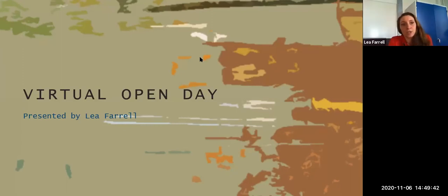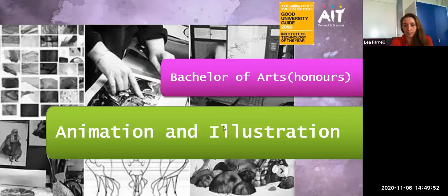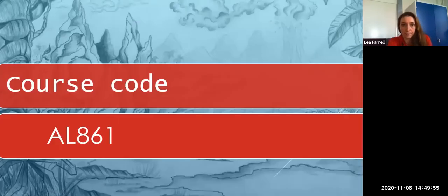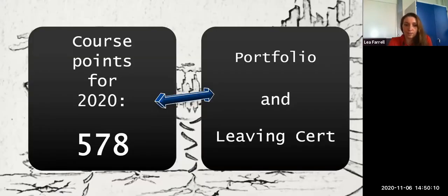The course is called Bachelor of Arts Honors in Animation and Illustration and the course code is AL861. This is important because when you go into the CAO website this is how you find the course. AL would be Athlone Institute of Technology, 861 would be the course code. The points you need to get into this course, you will need in total 578 points. Keep an eye on it because this changes every year. This sounds a lot, however it is combined total of your portfolio assessment scores and your leaving cert points.